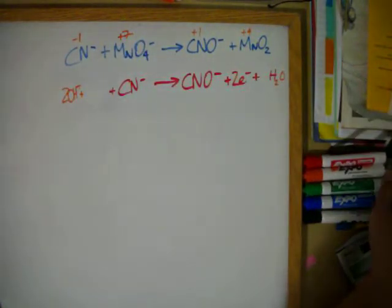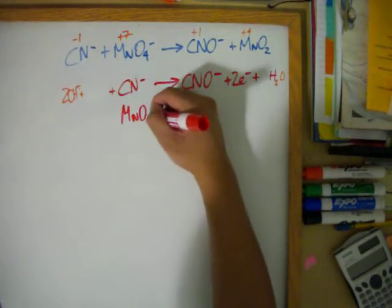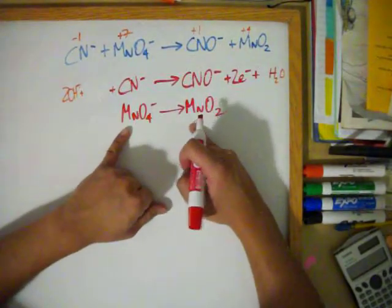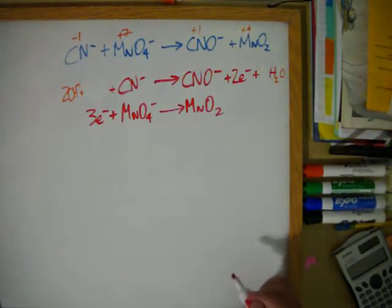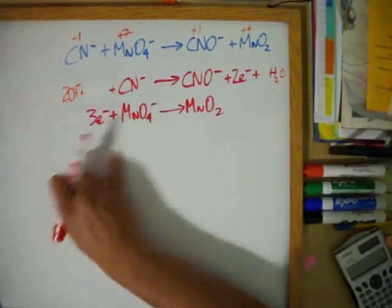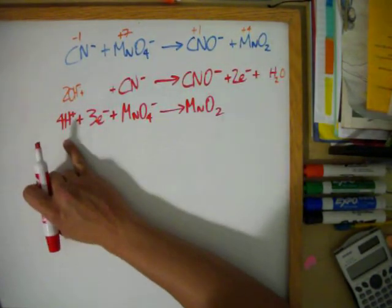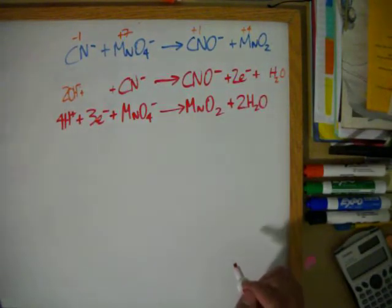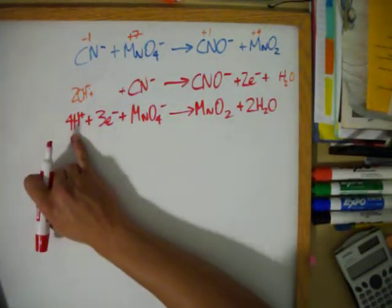The next step is to balance the manganese. So we have MnO₄⁻ producing MnO₂. First, there's one Mn on each side, so we're balanced. Now for charges: there's a plus 7 for this side and a plus 4, so let's add three electrons. There's negative 4 on this side and 0 on the other side, so let's add four hydrogen ions. Then there's four hydrogens and four oxygens, so let's add two waters. So there's four hydrogens and four oxygens.